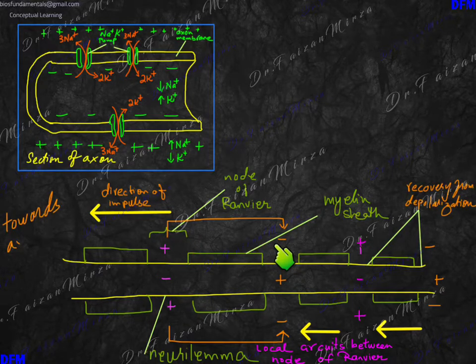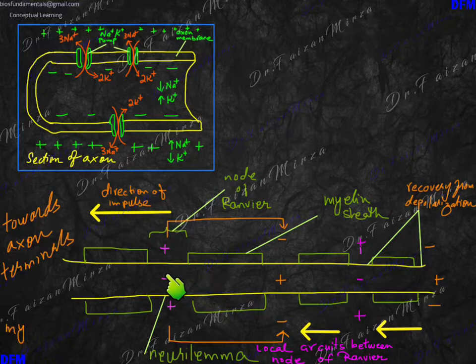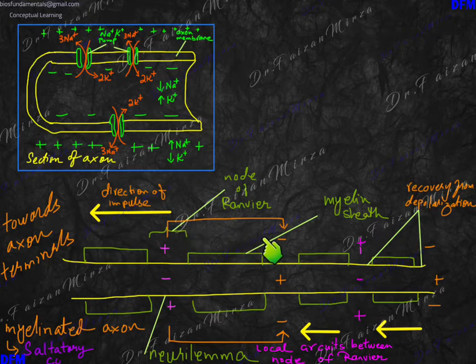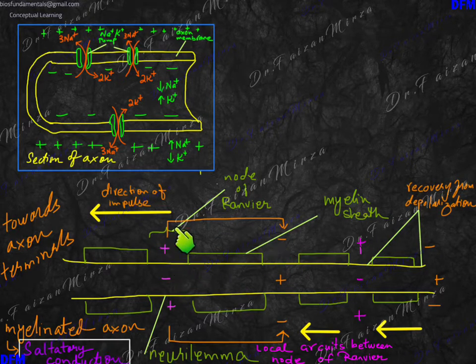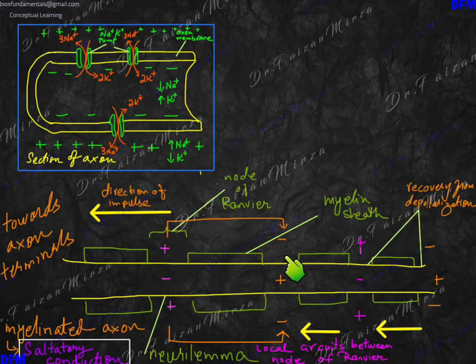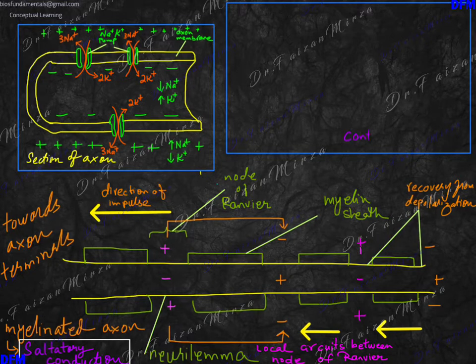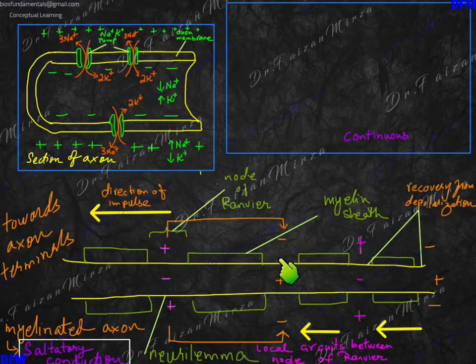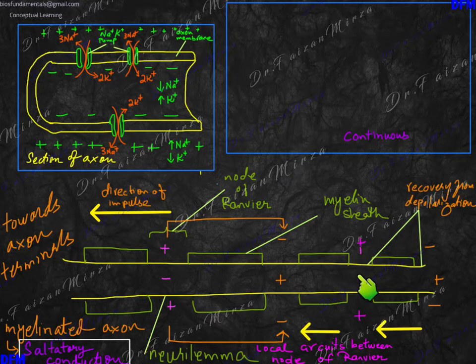Local circuits are the ones which are being developed because of the charges which are opposite at adjacent nodes of Ranvier. If it's a positive charge here, there's a negative charge here. So this causes the localized circuit to be established between two adjacent nodes of Ranvier, and when the localized circuit establishes, it causes the impulse to move ahead in the forward direction. So this is called saltatory conduction. Saltatory conduction is always very fast because only the nodes of Ranvier have to undergo depolarization and repolarization. As the impulse keeps moving forward, the previous nodes of Ranvier undergo repolarization and they become recovered.